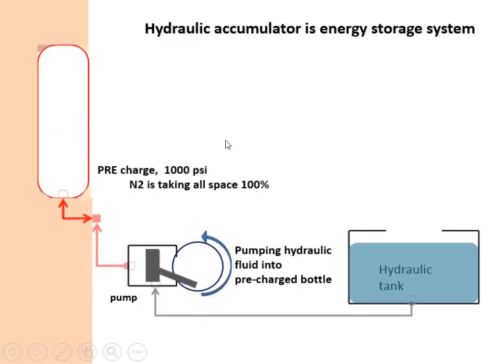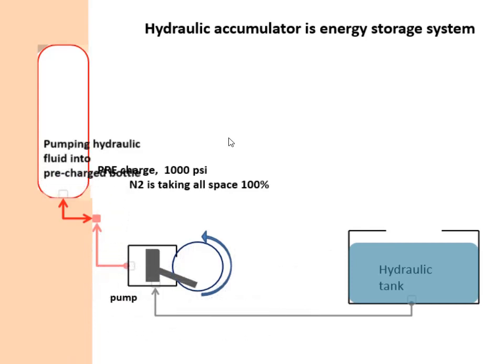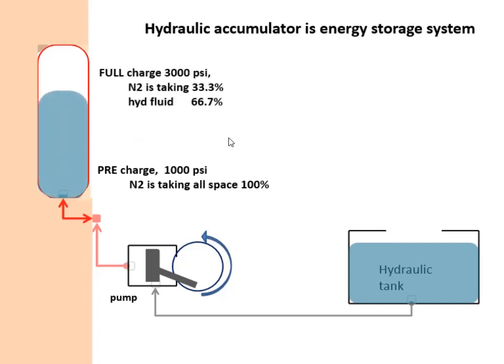Hydraulic accumulator is energy storage system. Energy is stored by forcing hydraulic fluid into pre-charged nitrogen bottles. Empty bottle already has 1000 PSI nitrogen pressure. By pumping hydraulic fluid into the bottle,